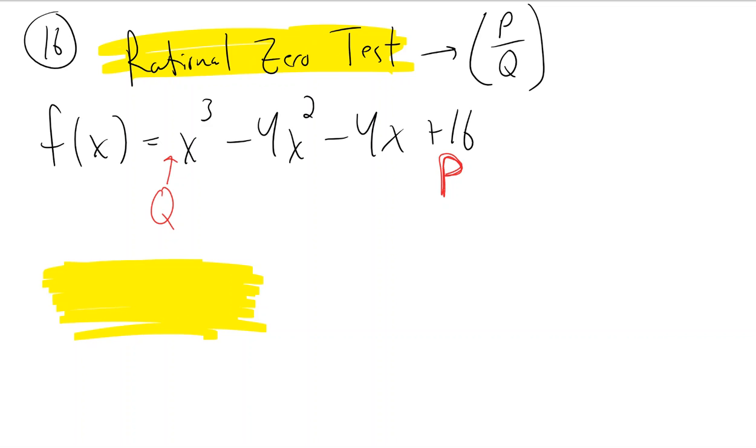And it says take plus or minus all the factors of p and divide by plus or minus all the factors of q. So plus or minus all the numbers that go into 16 would be plus or minus 1, 2, 4, 8, and 16.